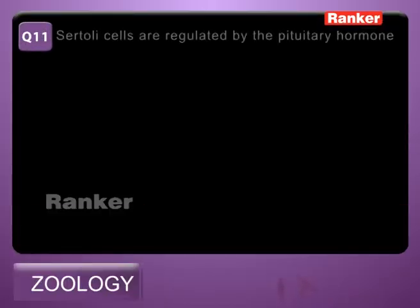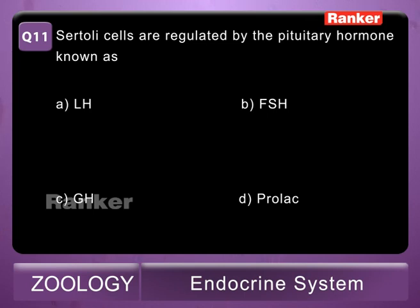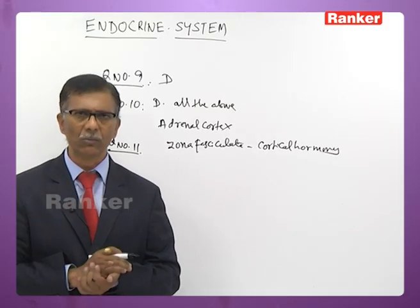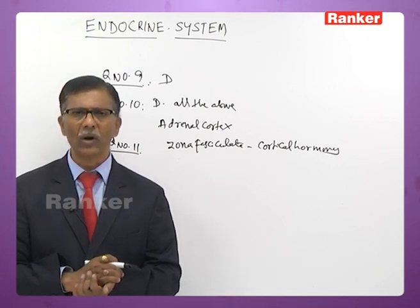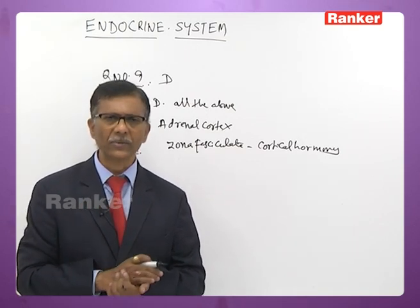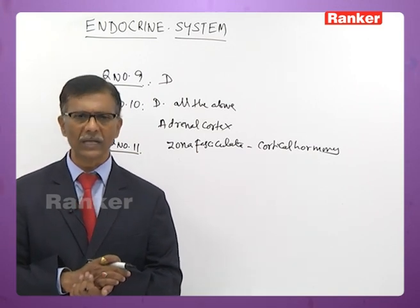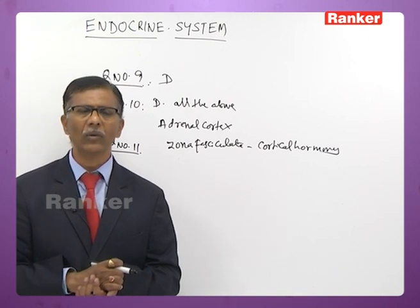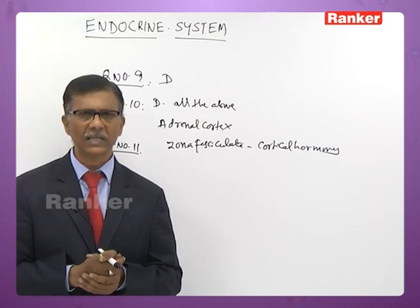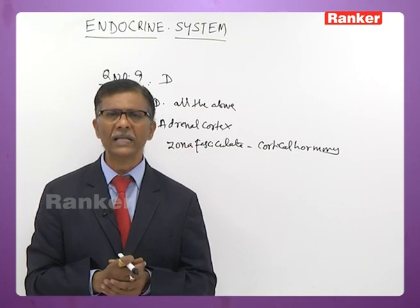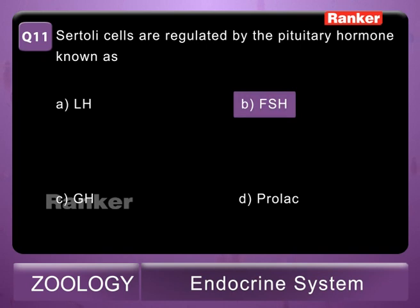Eleventh question: Sertoli cells are regulated by the pituitary hormone known as A - LH, B - FSH, C - GH, D - prolactin. Sertoli cells are present within the seminiferous tubules of the testes. They synthesize a hormone called inhibin under the influence of FSH. LH is mainly concerned with ovulation. FSH, apart from promoting follicle growth and external genitalia development, also stimulates Sertoli cells to synthesize inhibin. Eleventh question answer is B — FSH.